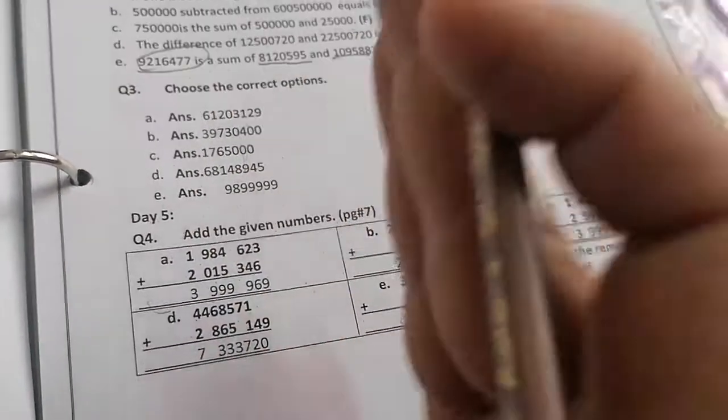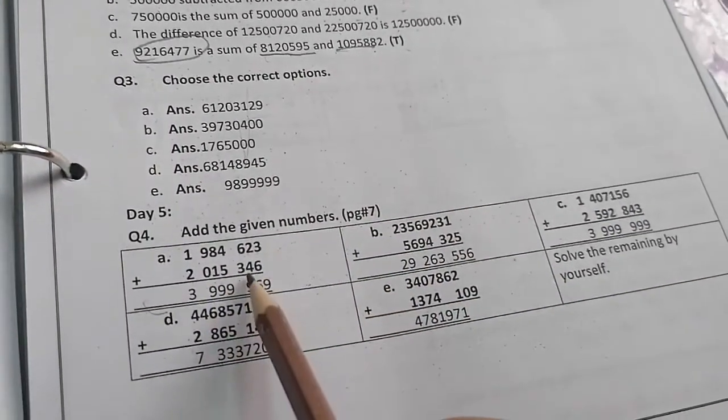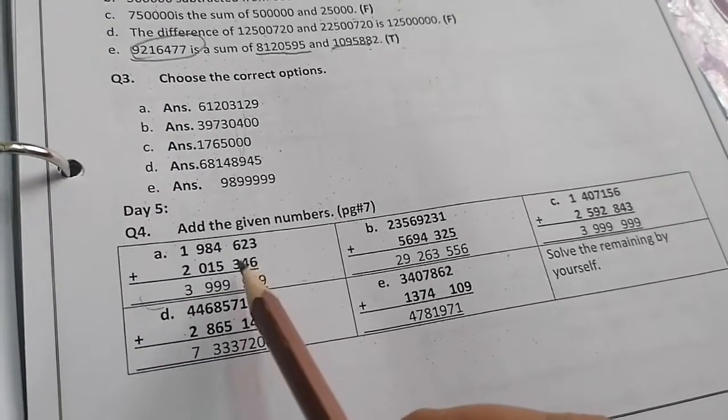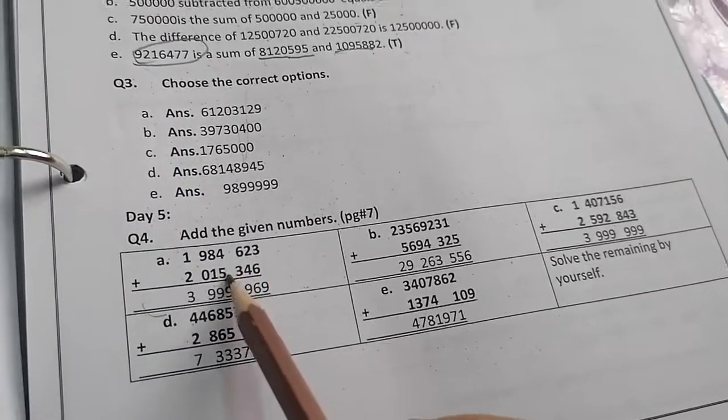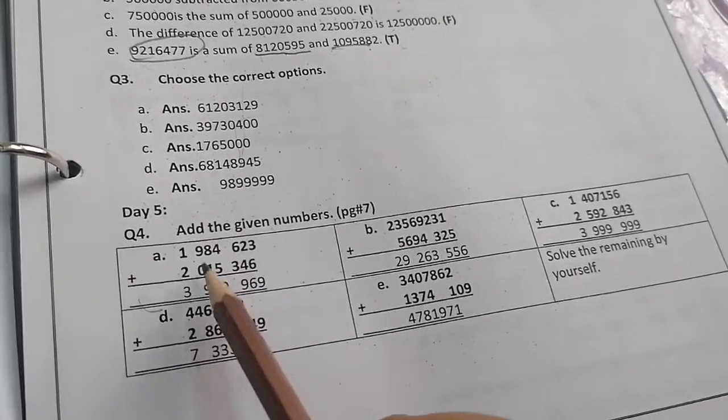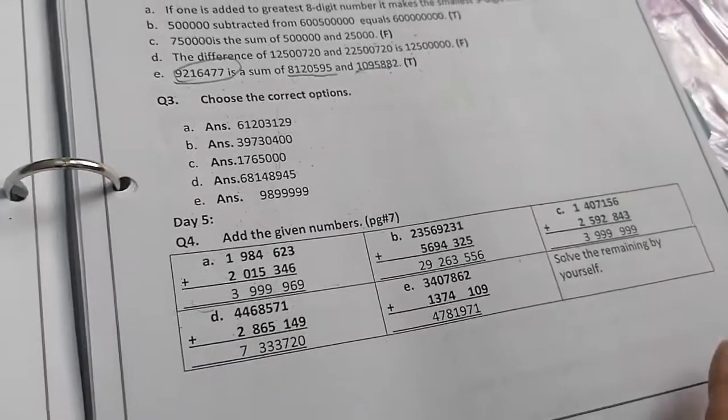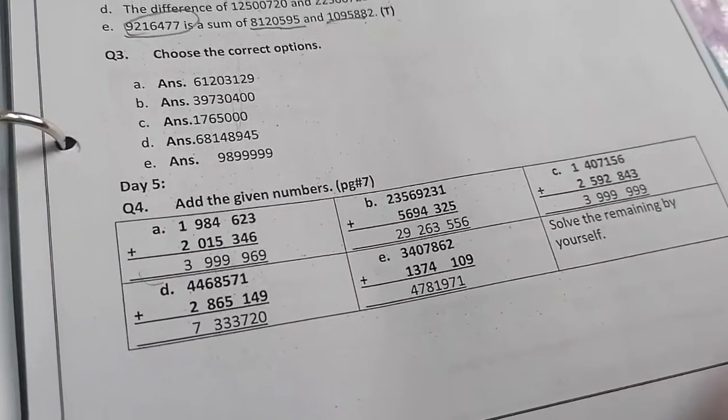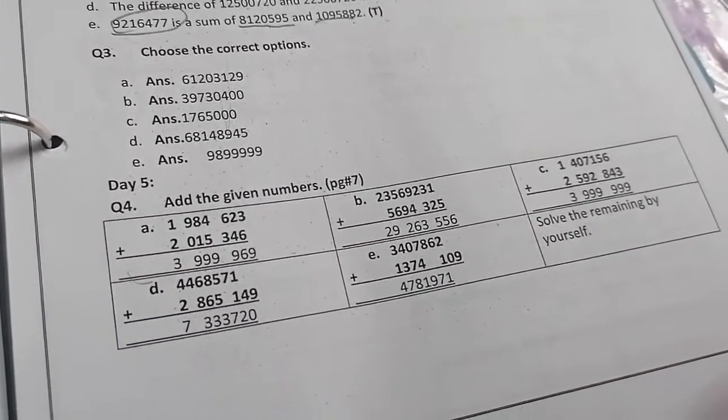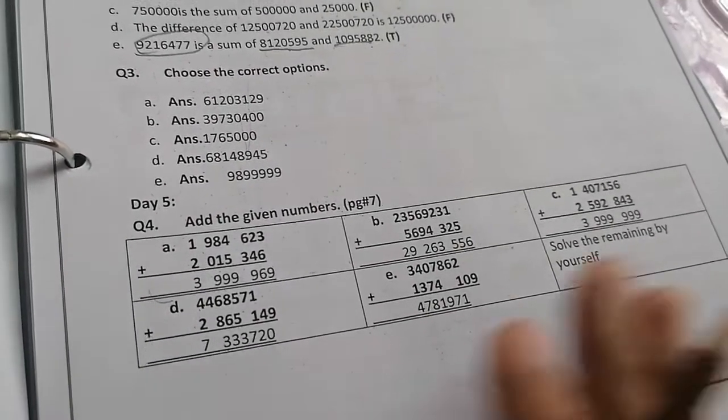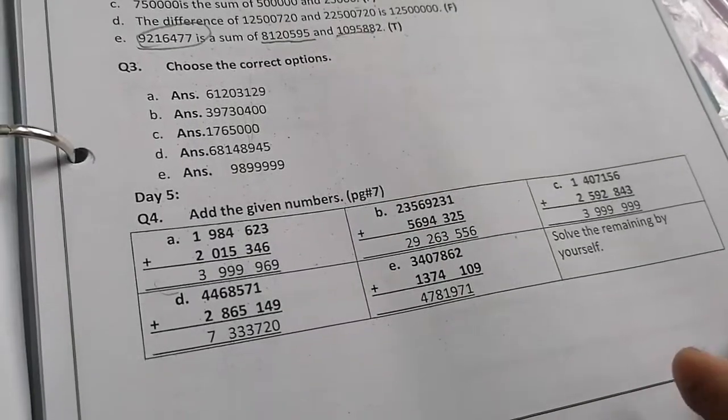What we have to do? We have to start from the right side of any sum. Adding the number 6 plus 3 is 9, 4 plus 2 is 6, 6 plus 3 is 9, 4 plus 5 is 9, 8 plus 1 is 9, 9 plus 0 is 9, 2 plus 1 is 3. Do the remaining sums by yourself. They are very easy and very simple. It's simple addition. They are on page number 7.